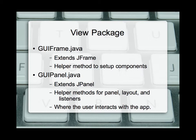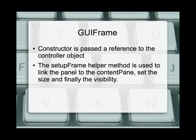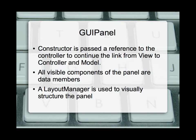The frame itself is only used to hold the panel and to close the application. Looking more closely at the GUI frame, this is where we have a constructor passing a reference to the controller, so we have access to it later on. By passing a reference we affect and interact with the original controller that is part of the actual application. We also have our setup frame helper method, which we use to set the content pane, create the size, and as the last step set its visibility so we can actually see the application. In our GUI panel, we also have a constructor passed a reference to the controller object, keeping that link between the view, the controller, and the model. All visible components are data members — private, listed up in the declaration section, so we can access and use them as necessary.